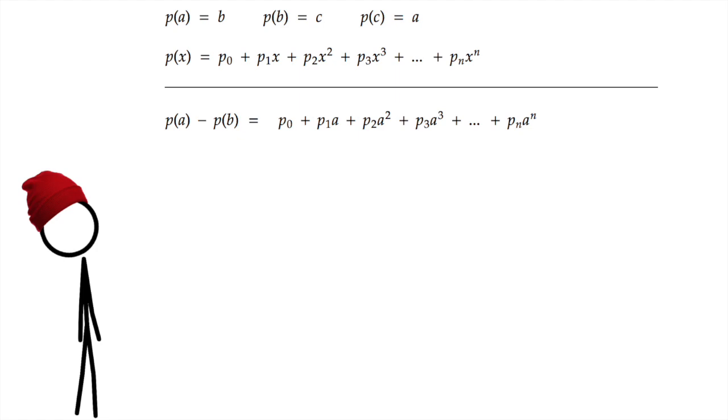p of a is going to be p naught plus p1a plus p2a squared plus p3a cubed plus dot dot dot plus pn a to the n. And similarly, p of b is p naught plus p1b plus p2b squared plus pnb to the n. But now, when you subtract p of b, look, these two p naught terms, they are constants, so they're just going to cancel. And then all that's left is this giant symmetric mess of a's and b's. So why would I do this? Well, because we can take out a factor of a minus b here.